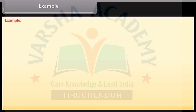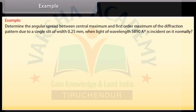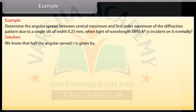Let's take an example on diffraction pattern due to a single slit. Determine the angular spread between central maximum and 1st order maximum of the diffraction pattern due to a single slit of width 0.25 mm when light of wavelength 5890 angstroms is incident on it normally. We know that half the angular spread is given by a sin theta = (2n+1)λ/2.